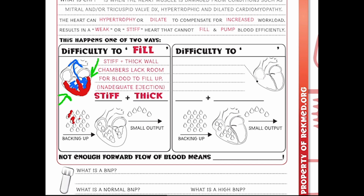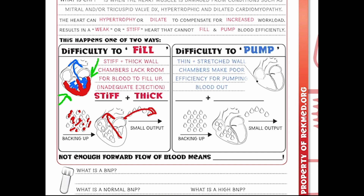We also have difficulty to pump, which means there are thin and stretched wall chambers, making for very poor efficiency for pumping blood out. Right here, if we look at the chambers of our heart, they're very thin because they've been stretched out so much from all of this blood backing up and accumulating. Again, we have our blood backing up and, once again, a small output. Not enough forward flow of blood means our blood is going to back up.